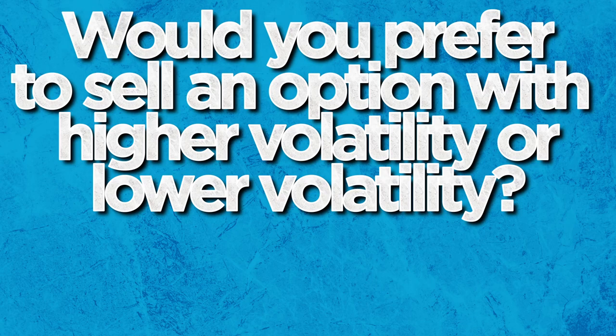Now let's turn our attention to volatility. Given the work we just did with time, the relationship between implied volatility and extrinsic value should be fairly straightforward. If you're the option seller, would you prefer to sell an option in a stock with higher volatility or lower volatility? Lower volatility, of course — you're taking all the risk, so you'd much prefer a stock that doesn't move around much, something more predictable, rather than something that can do a whole lot of damage in a hurry.